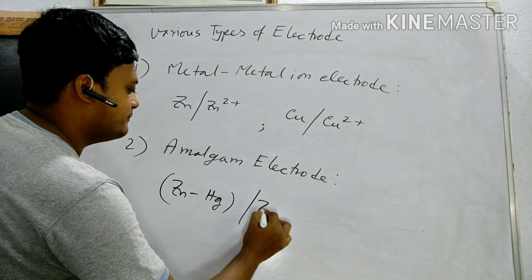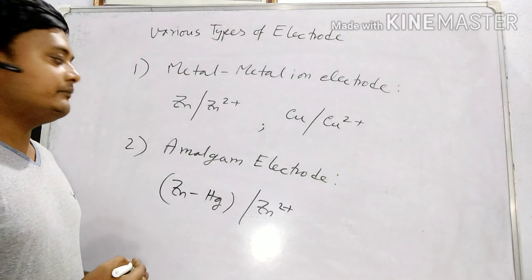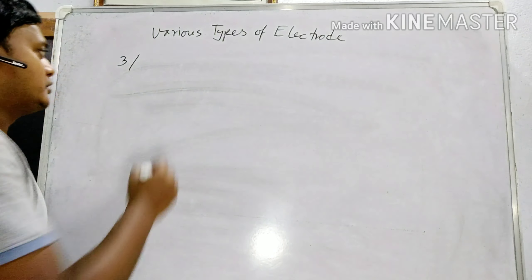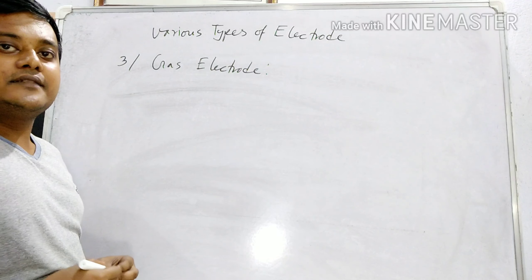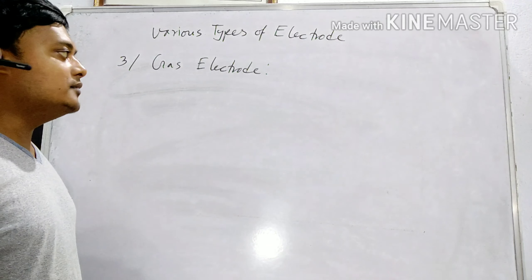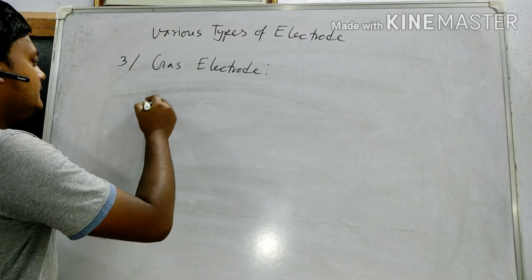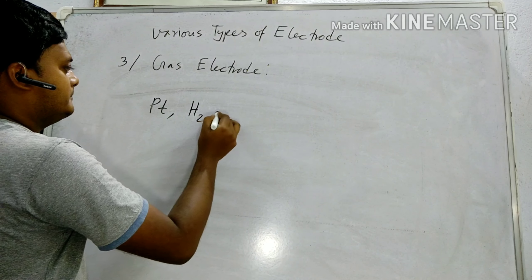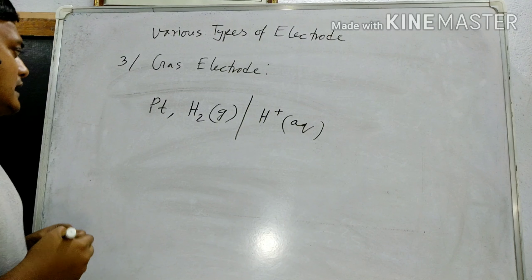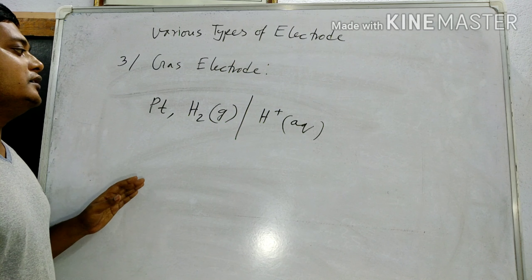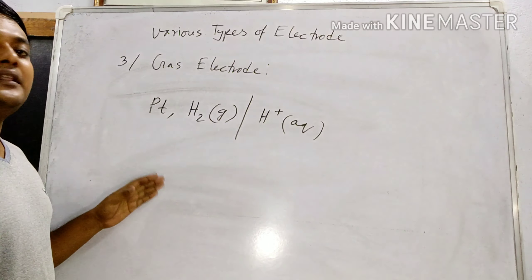An example is zinc amalgam: Zn(Hg) / Zn²⁺. The third type is the gas electrode. In this case, an inert electrode like platinum is dipped into a solution containing ions of a gaseous element — for example, the hydrogen electrode.